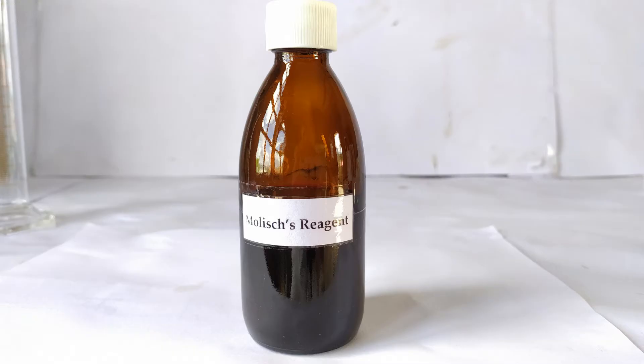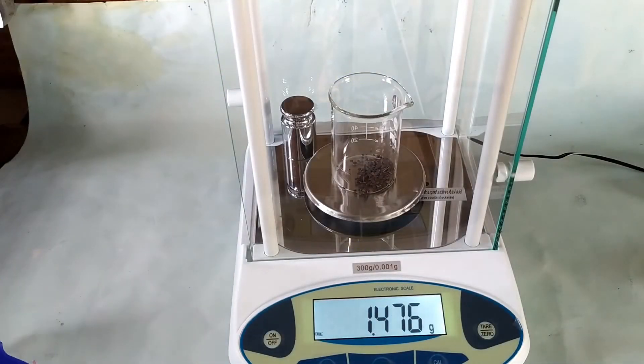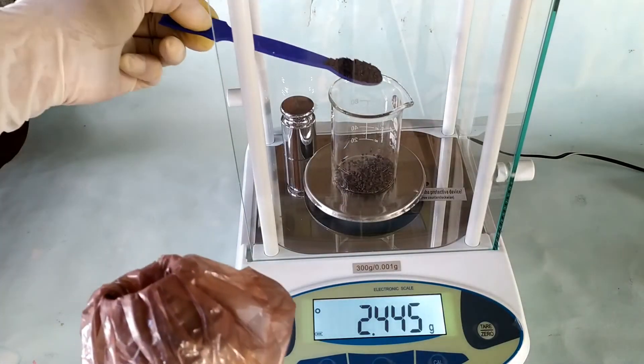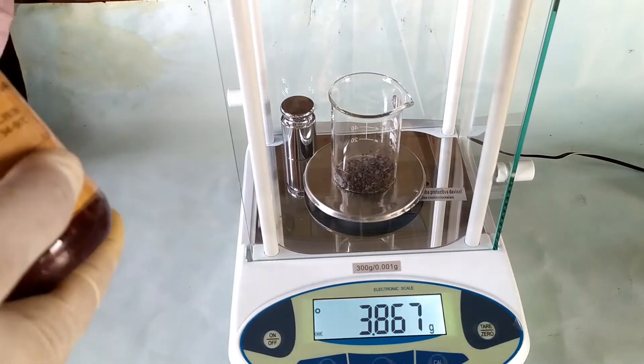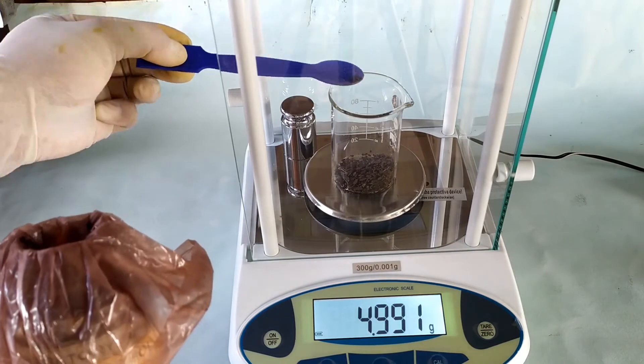To begin the protocol, first weigh exactly 5 grams or 15 grams of alpha naphthol in the 100 ml beaker using a weighing scale. I'll be weighing 5 grams for this.